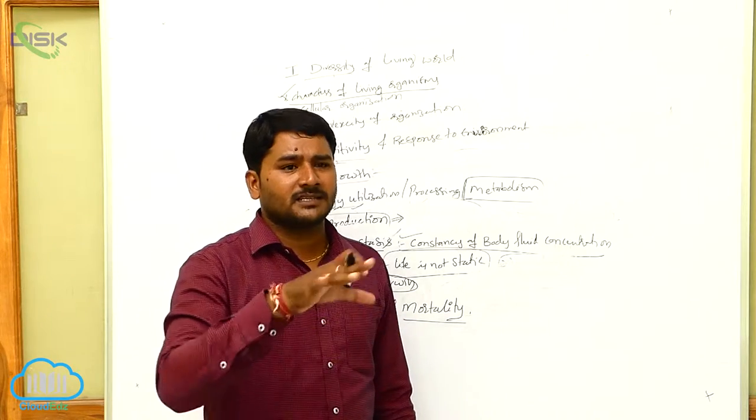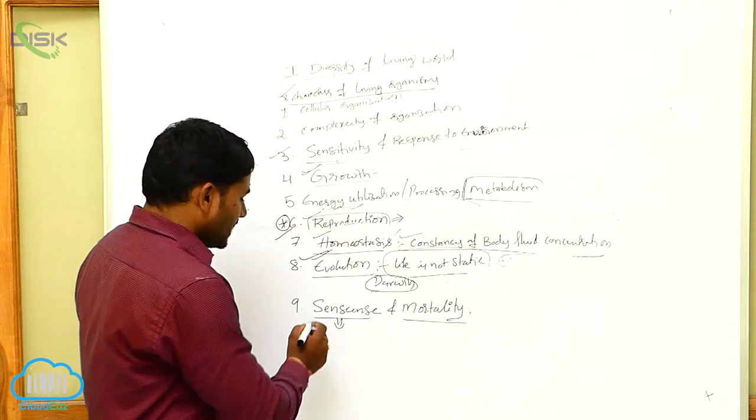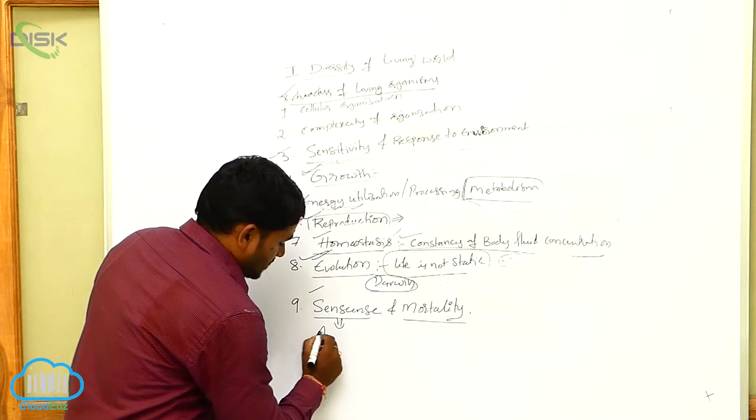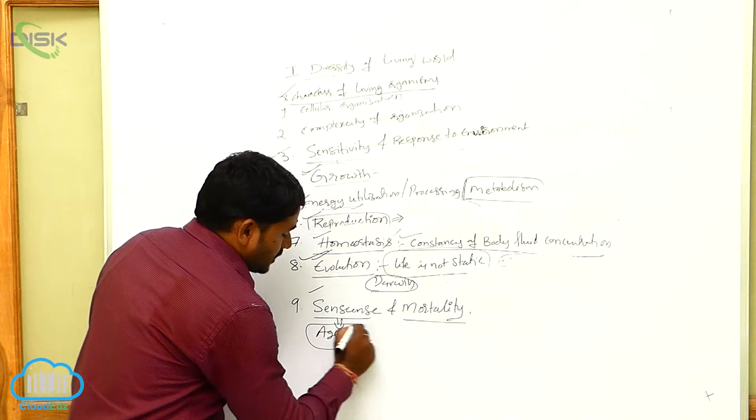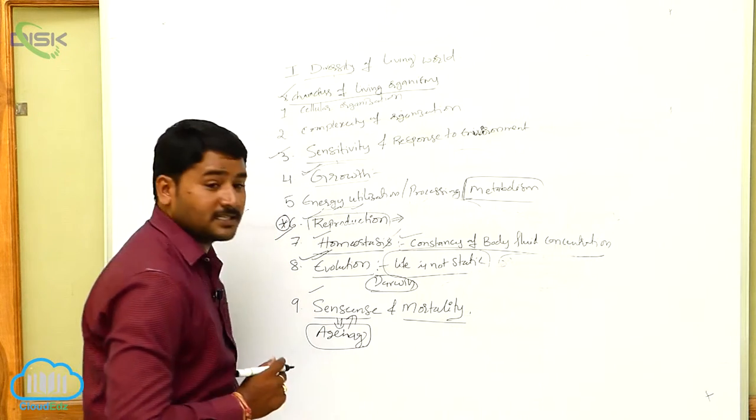So that happens in each and every individual's life. So here the meaning of senescence is the process of aging. The process of aging is called senescence.